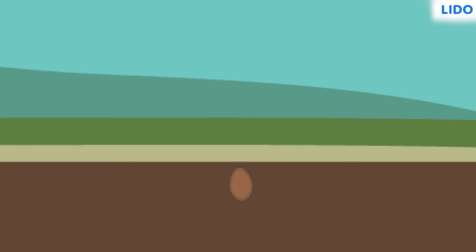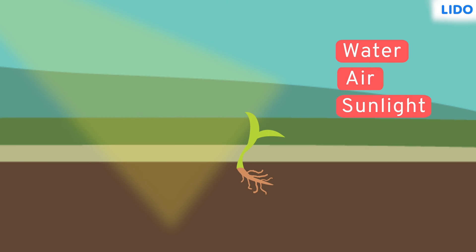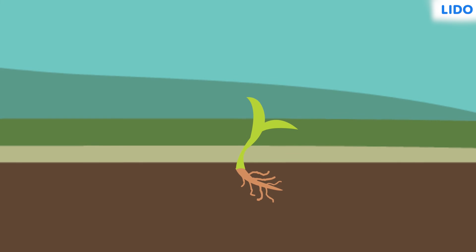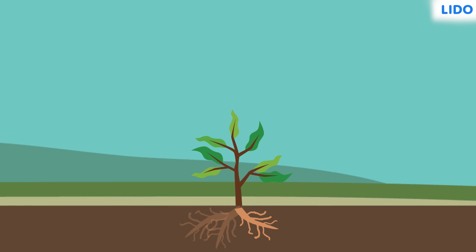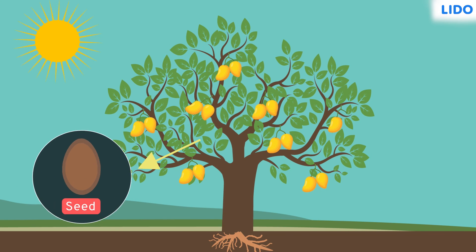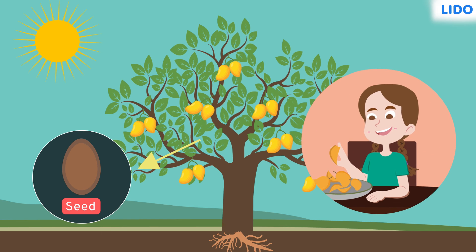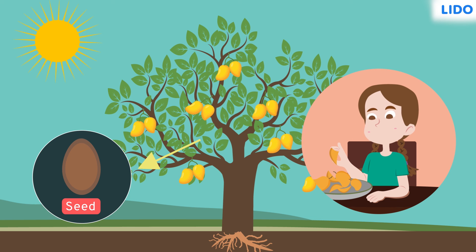When this seed is sown in the soil and given enough water, air and sunlight, it grows into a new plant which eventually grows into a large tree. This is how big mango trees grow from the tiny seeds and Shweta gets to relish her favourite summer fruit as much as she wants.